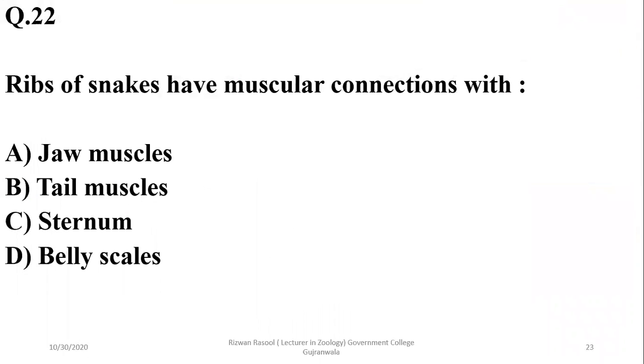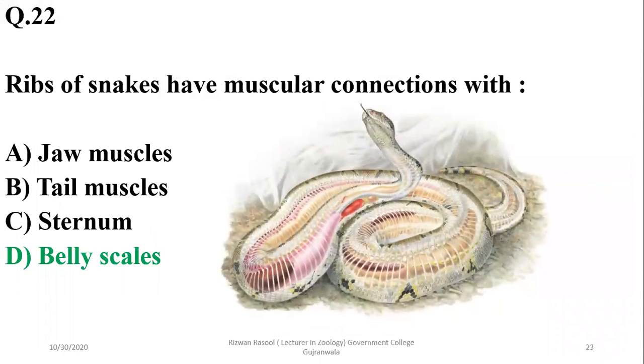Question twenty-one: the ribs of snakes have muscular connections with their large belly scales, and this allows their undulating movements on the ground. The correct option is delta.